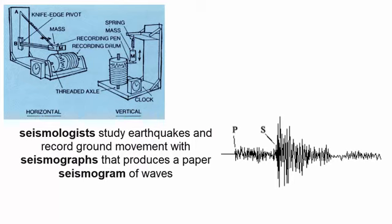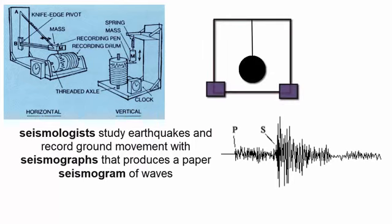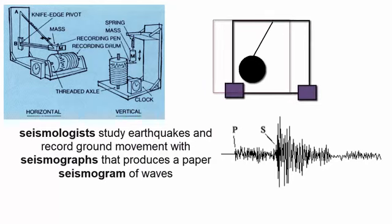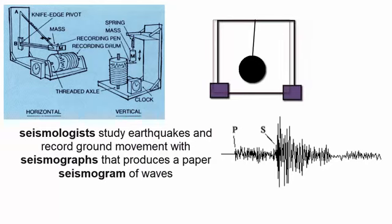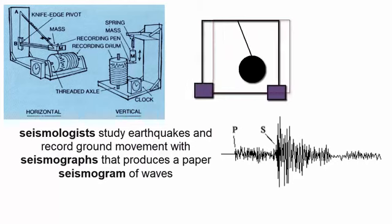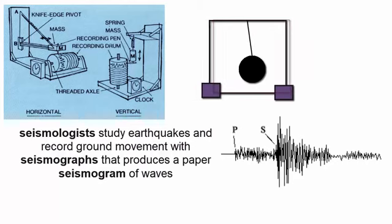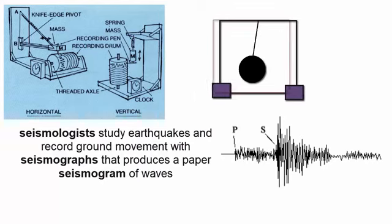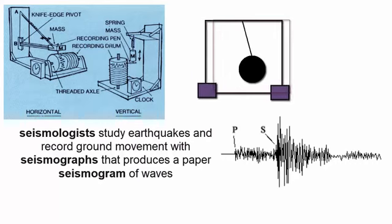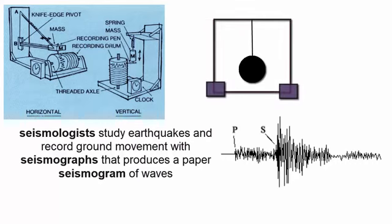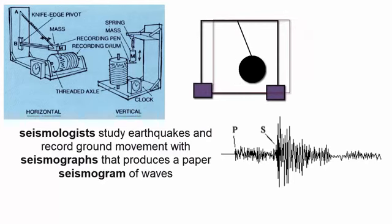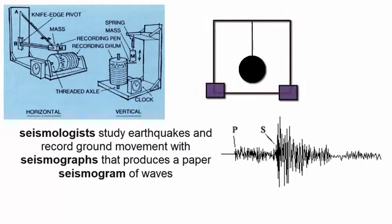A simple seismograph can be described as a hollow box attached to the ground so it moves in exactly the same direction and motion as the ground. Dangling in the middle of the box from the top is a heavy weight that is attached to a thin line. The weight is pulled towards Earth's center by gravity and because of its mass will stay in place during an earthquake while the box moves with the Earth around it. We can then measure how much distance is created in each dimension of the box between the weight and the sides of the box as the box moves with the Earth. Thus, we can record accurate motion of the Earth.